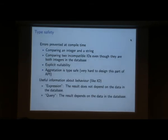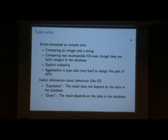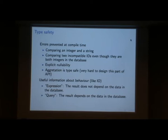I'm going to skip over this very quickly. You can't compare an integer and a string, but you can also do an equivalent of newtyping, which stops you comparing two integer IDs that shouldn't be compared because they represent different things in your tables. Nullability is explicit, and aggregation is typesafe. This part was really the hardest bit to do in Opaleye — it seems to be very difficult to come up with the right idea for doing typesafe aggregations, but Opaleye gets this right.